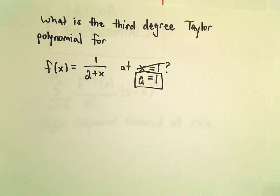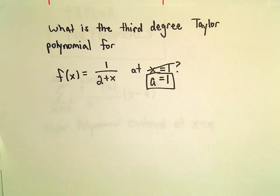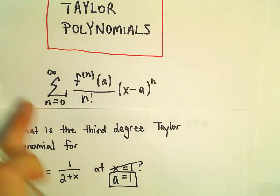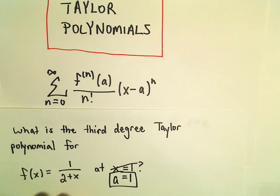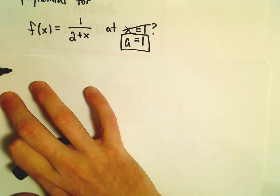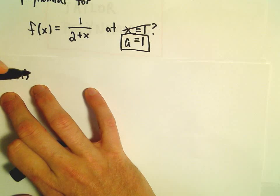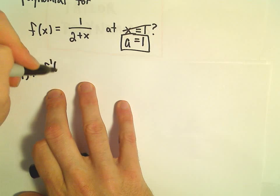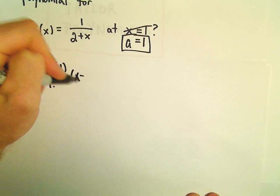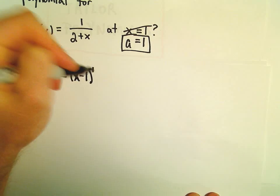So to get the third-degree Taylor polynomial at our value of a equals 1, I'm just going to use our formula right here, got it written a little more compactly. So we'll have f of a, which is going to be f of 1, plus f prime of a over 1 factorial times x minus a to the first.